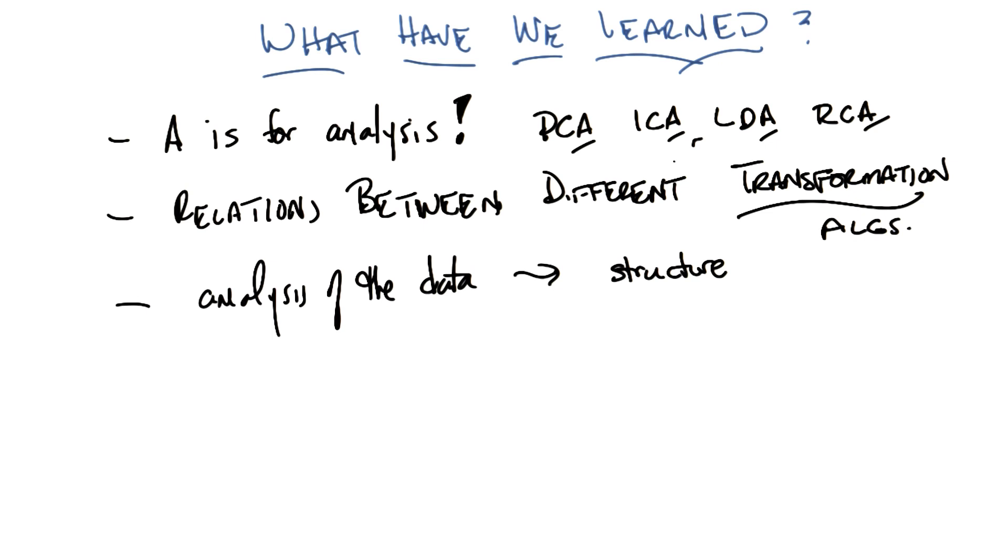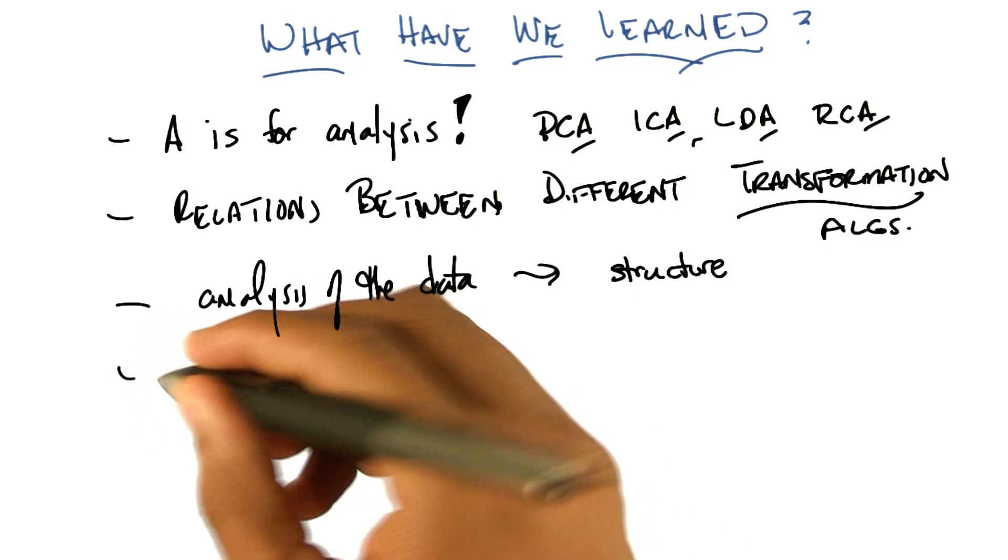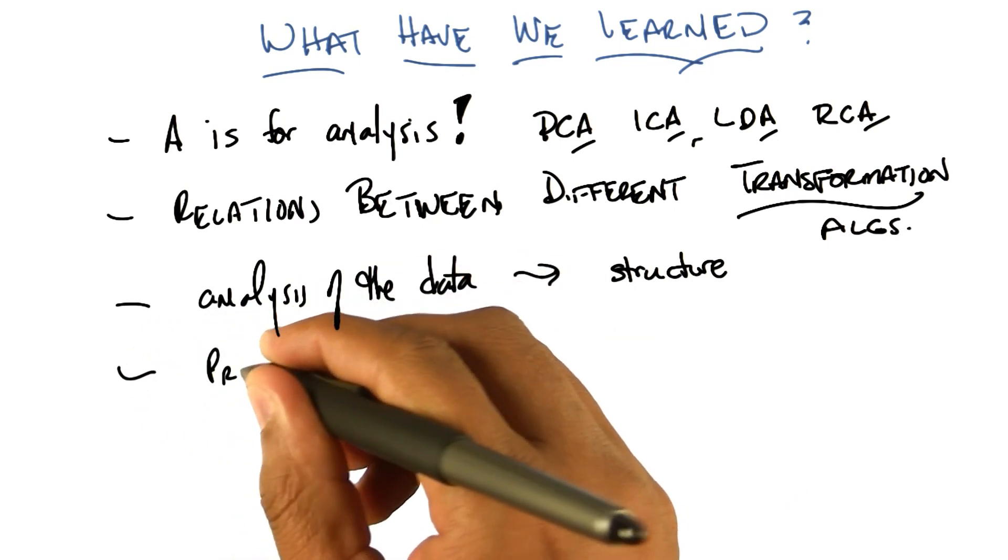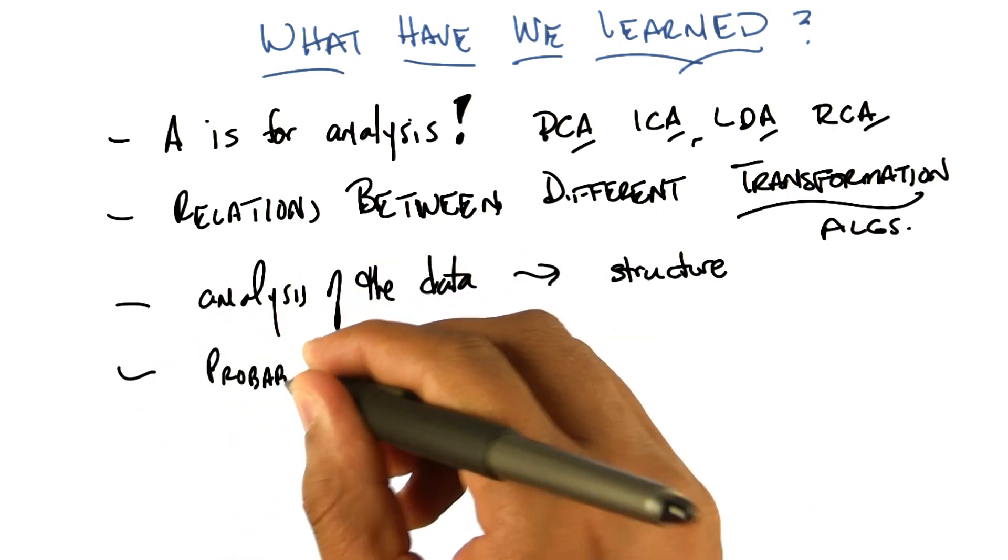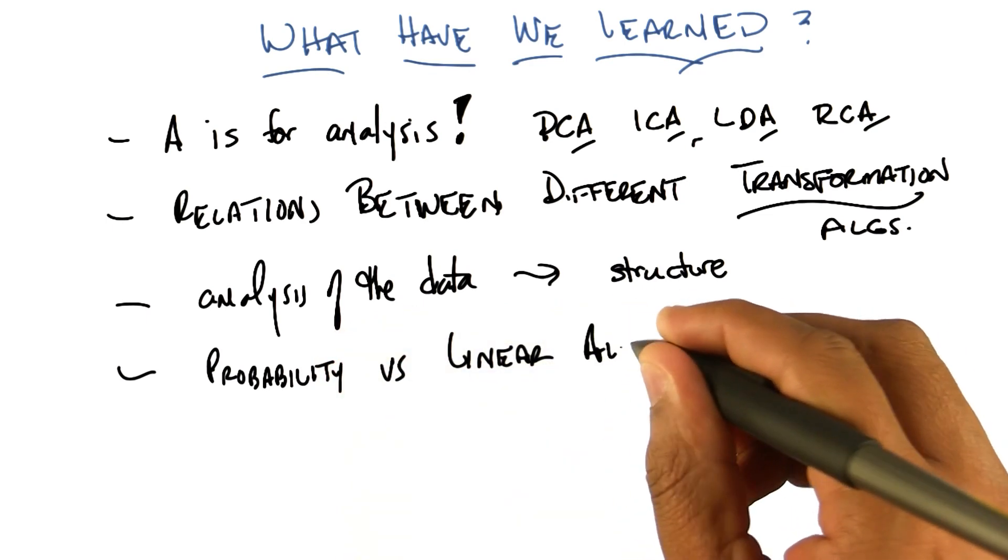Yeah, sure. Okay, did we learn anything else? So yeah, I mean, I feel like we spent a lot of time talking about ICA as a more probabilistic kind of modeling method, and PCA is a more linear algebraic modeling model. That's a really good point, Michael.